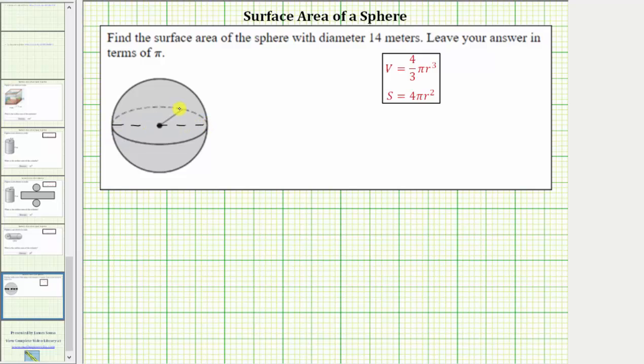And because the radius is a distance from the center to the surface of the sphere, the radius is half of the diameter. So if the diameter is given as 14 meters, then the radius is seven meters.